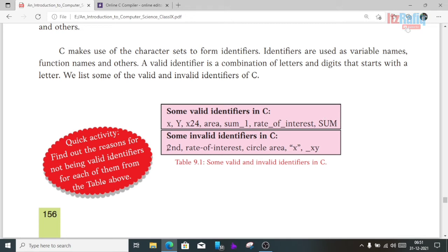Invalid identifiers include: 2nd (starts with a number, so it's invalid), rate-of-interest (contains dash symbol, which is not allowed except underscore), circle area (contains space between words, spaces are not allowed), quotation marks around x (we cannot use symbols other than underscore), _xy (identifiers should start with an alphabet, not a symbol, so this is also invalid).